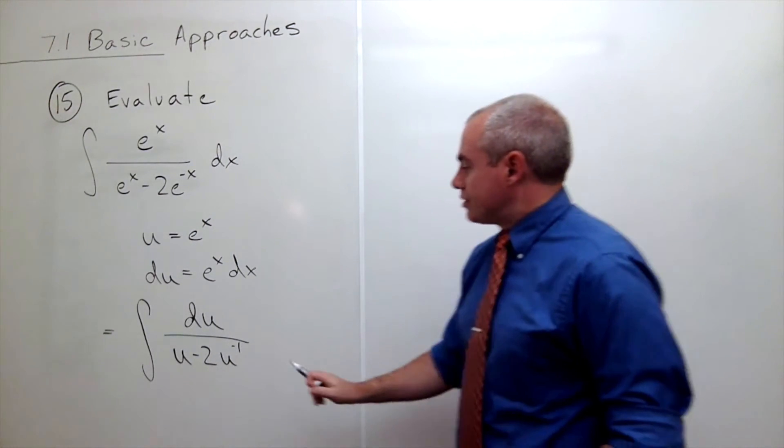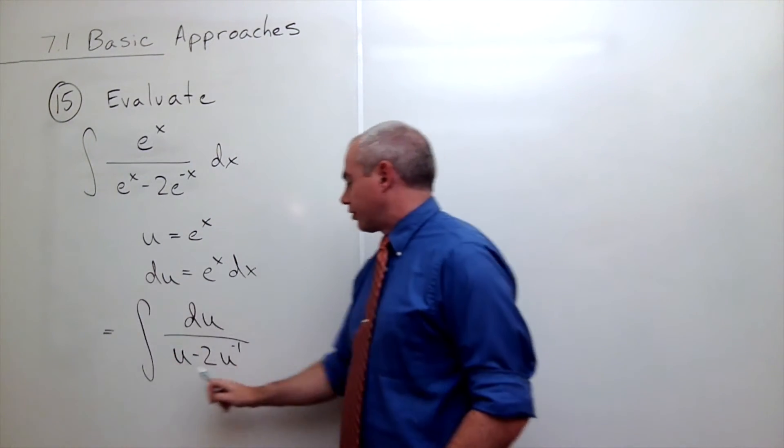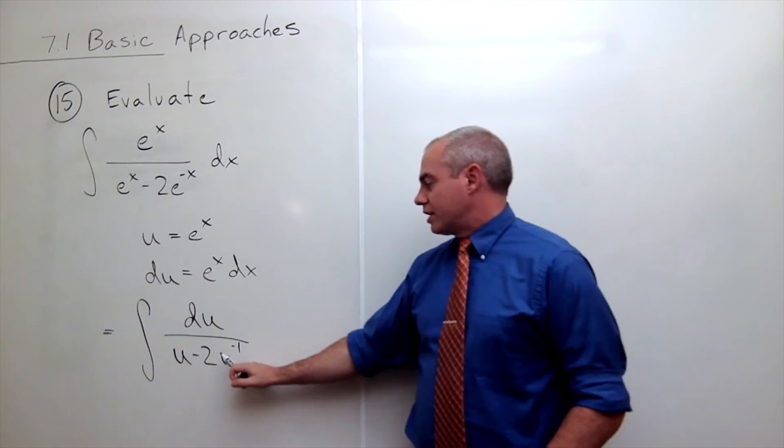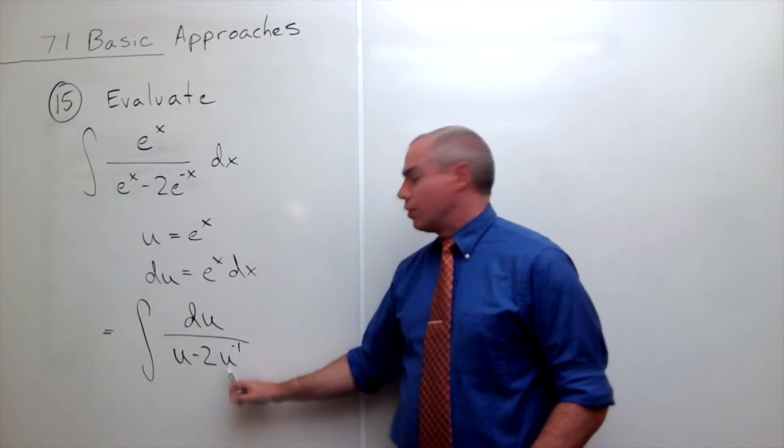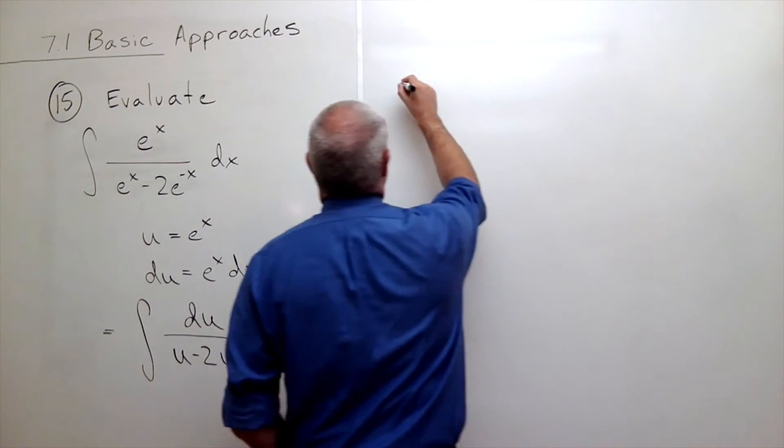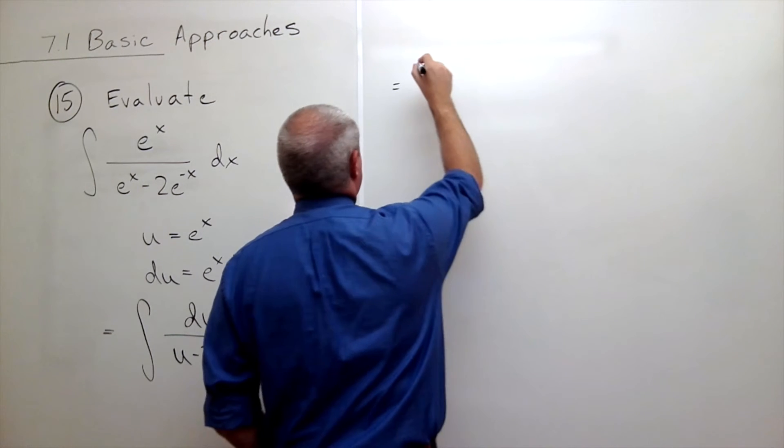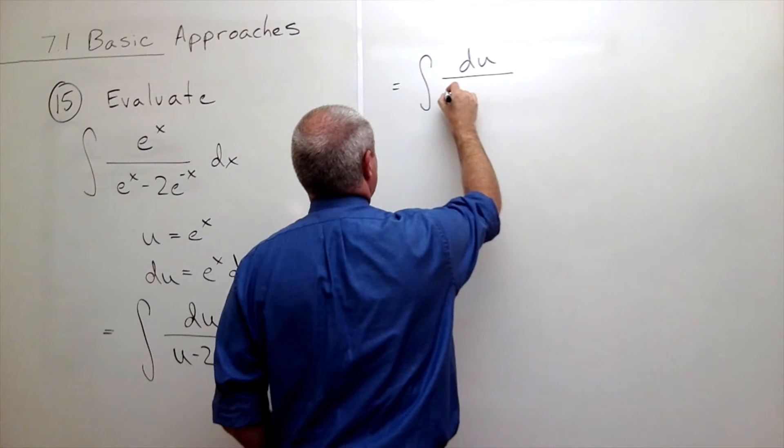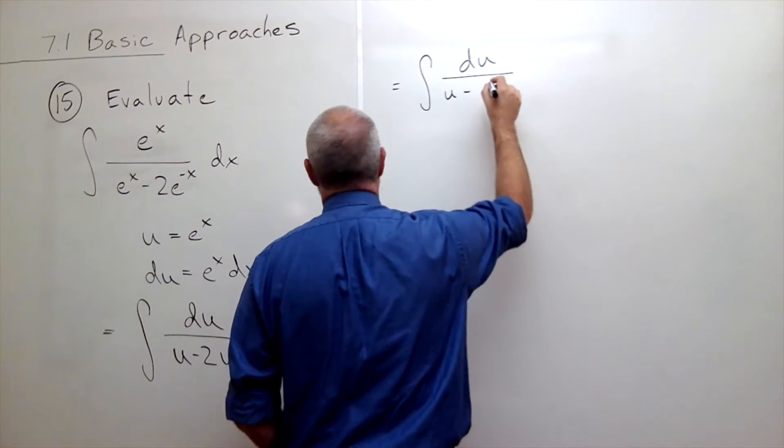Alright, so this is my new integral and now let's see what we can do with that. Well, u to the minus 1 is the same as 2 over u, so maybe I should write it that way instead. So let me rewrite this: this is equal to the integral of du over u minus 2 over u.